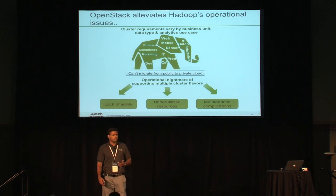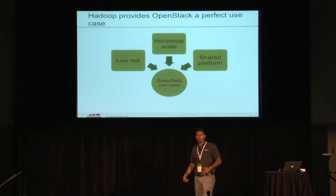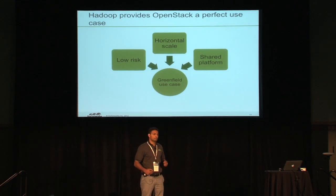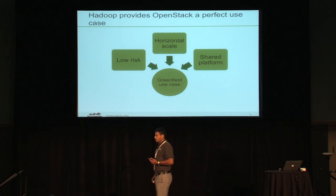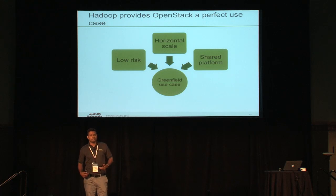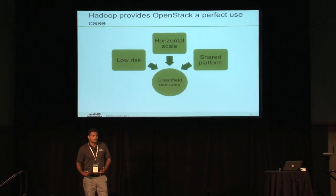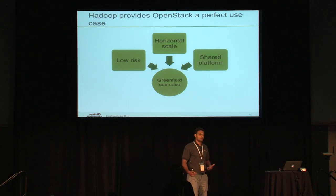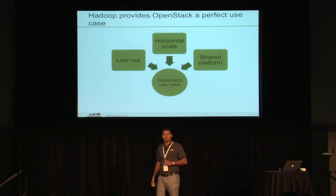On the other side, what does Hadoop bring to the table for OpenStack? There are really three things. First, Hadoop is new to IT and the enterprise — it doesn't have legacy processes attached to it, making it a perfect POC use case for OpenStack in a typical enterprise. Second, it scales horizontally, which ties well to cloud application architecture where high availability and scalability should be built into the application itself. Third, it's a big giant shared platform across the enterprise, making it a perfect greenfield use case for OpenStack.